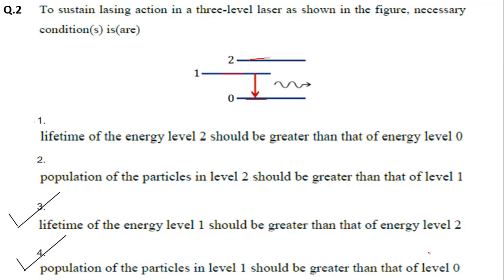For option 3: the lifetime of energy level 1 must be greater than the lifetime of energy level 2. This means if a particle sits at level 1, it stays there longer — so particles from level 2 will accumulate at level 1. For option 4: population inversion is necessary for lasing action — the higher energy level must have more particles than the lower level. Therefore options 3 and 4 are correct.